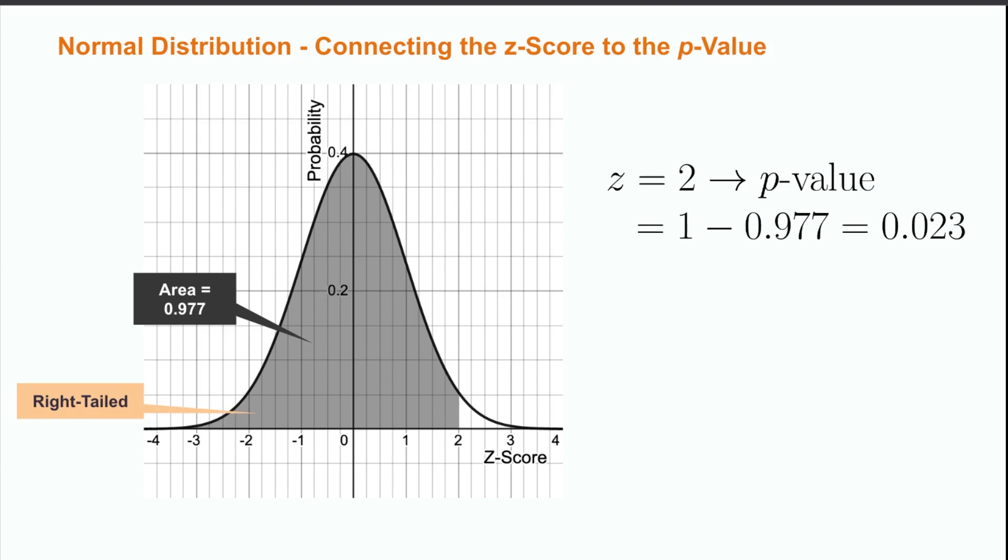For a one-tailed test, in particular a right-tailed test up to the value of z equals 2, we would have that the p-value is equal to 1 minus the area from negative infinity to 2. This has an area of 0.977, which leads to a p-value for the right-tailed test of 0.023. This process of determining p-values can, in general, either be done tabularly or computationally, and is specific to each problem type.